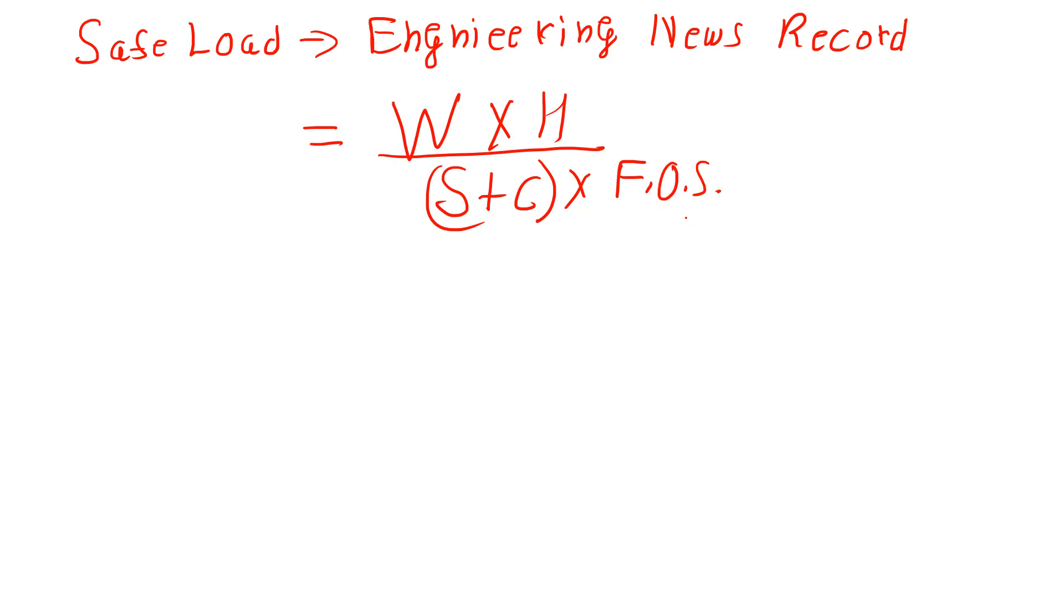We have Factor of Safety equal to 6, W (weight of hammer) equal to 20 kilonewtons, and H equal to 1.5 meters. But in this formula we need it in centimeters, so 1.5 times 100 equals 150.